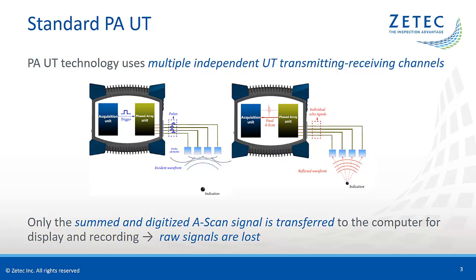Phased array technology uses multiple independent UT transmitting and receiving channels. The signals of the individual elements of an array probe are pulsed and received using focal laws or delay laws, and are then summed to generate a single A-scan signal for each beam. The set of summed A-scans can typically be a sectorial, linear, or compound sweep. For standard phased array, it's important to keep in mind that only the summed and digitized A-scan signal is transferred to the computer for display and recording, while the A-scan signals from the individual elements are lost.